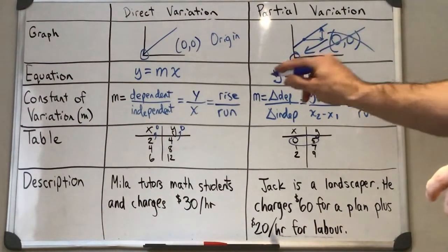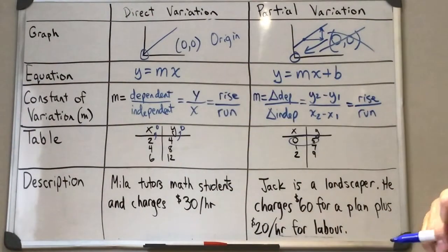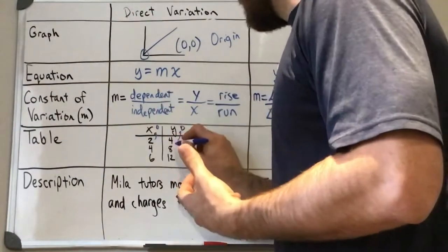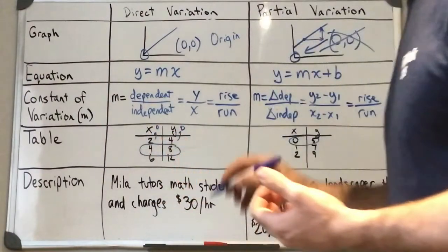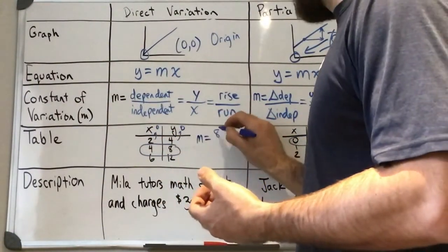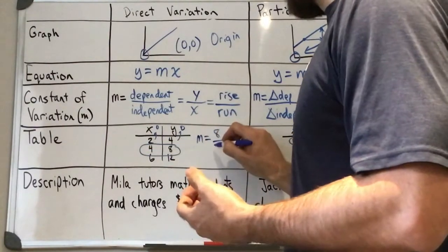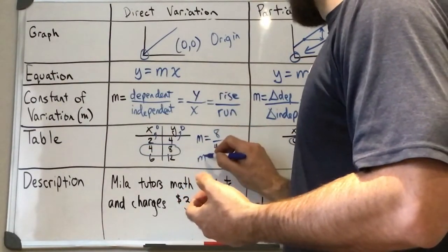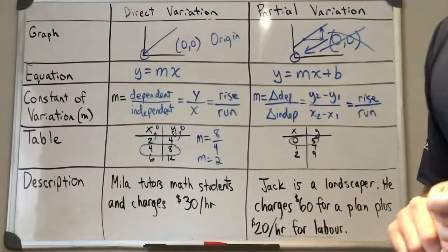So if I wanted to calculate my constant of variation, I can choose any point here and take my dependent, which is eight, my independent, which is four, and we can see that m would be equal to two.